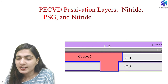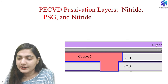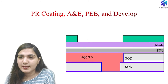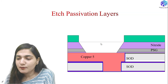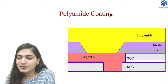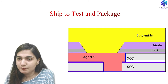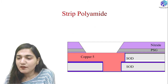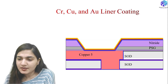The PE-CVD passivation layer is then formed using nitride, phosphosilicate glass (PSG), and nitride layers. Photoresist coating, alignment, exposure, PEB, and development are used to mask and etch the passivation layer to make the connection from the fifth metallization layer to the outside world. After stripping the photoresist, polyamide coating is applied and the chip is sent to test and packaging.